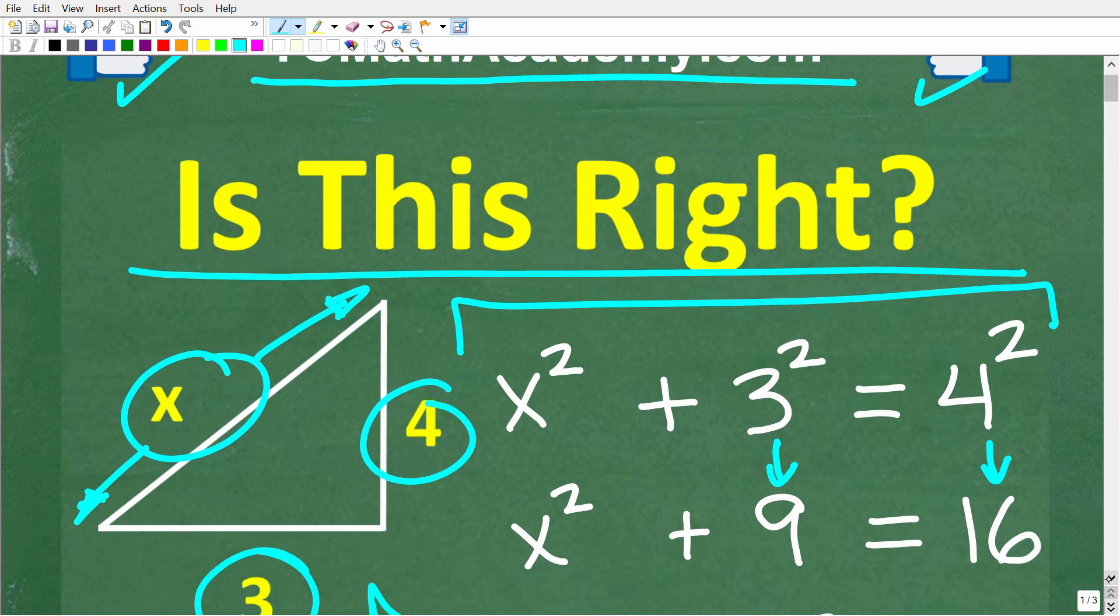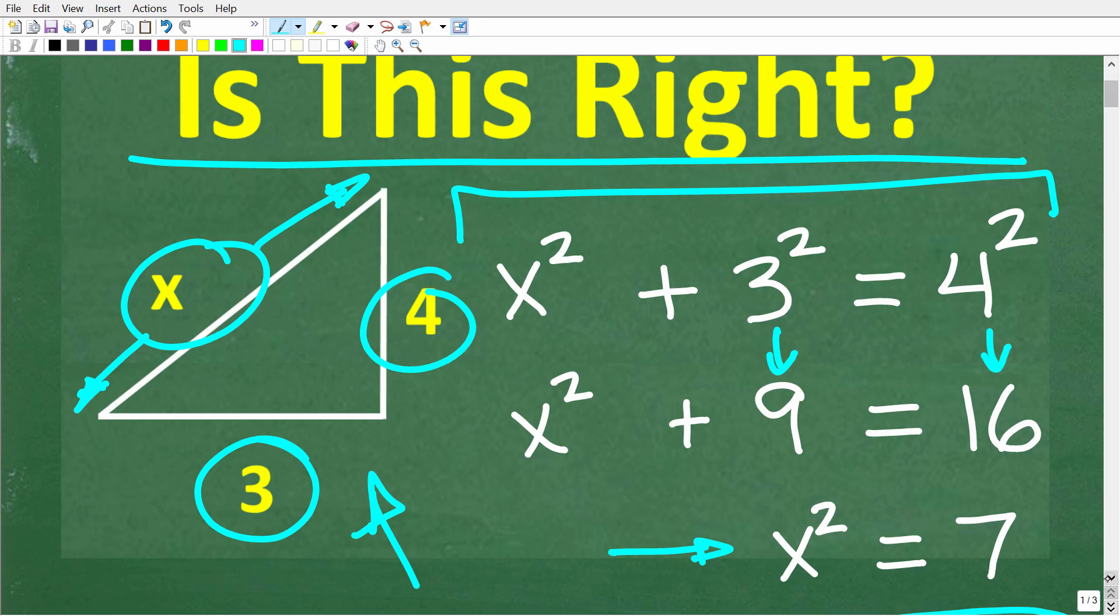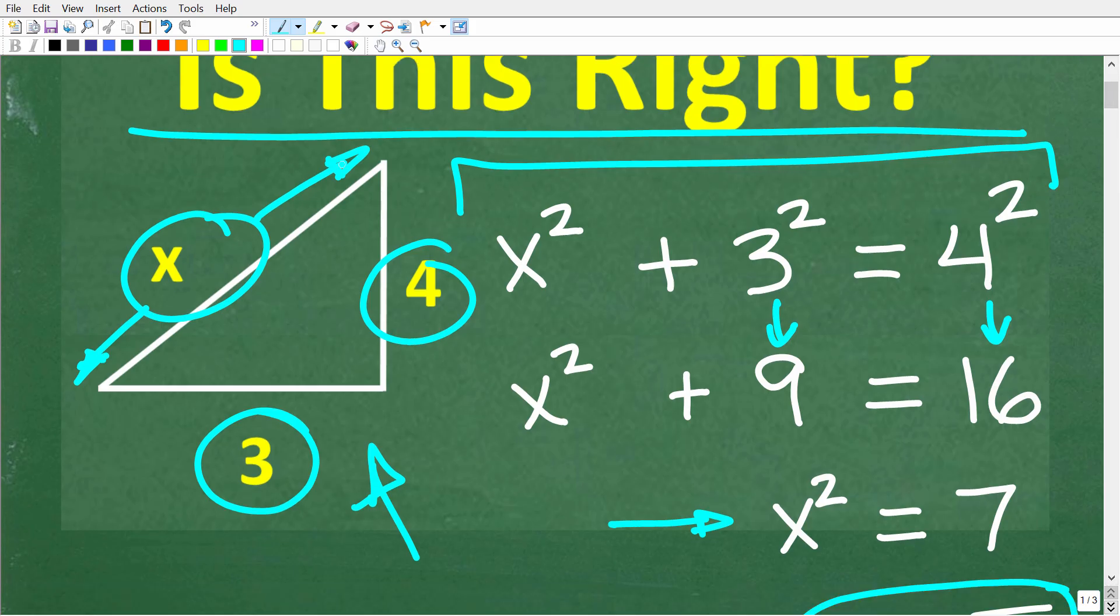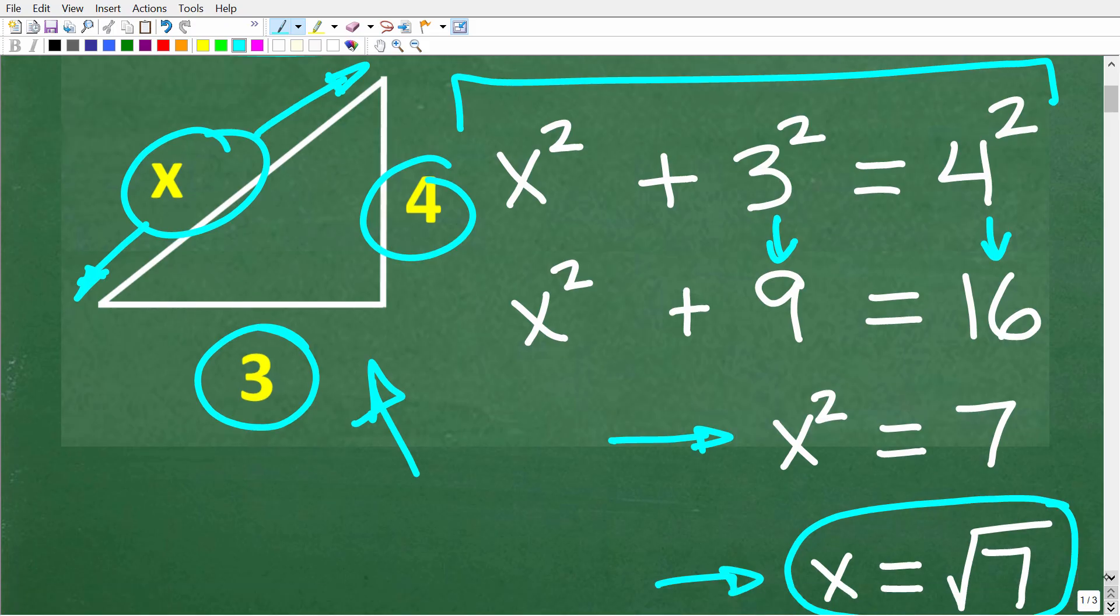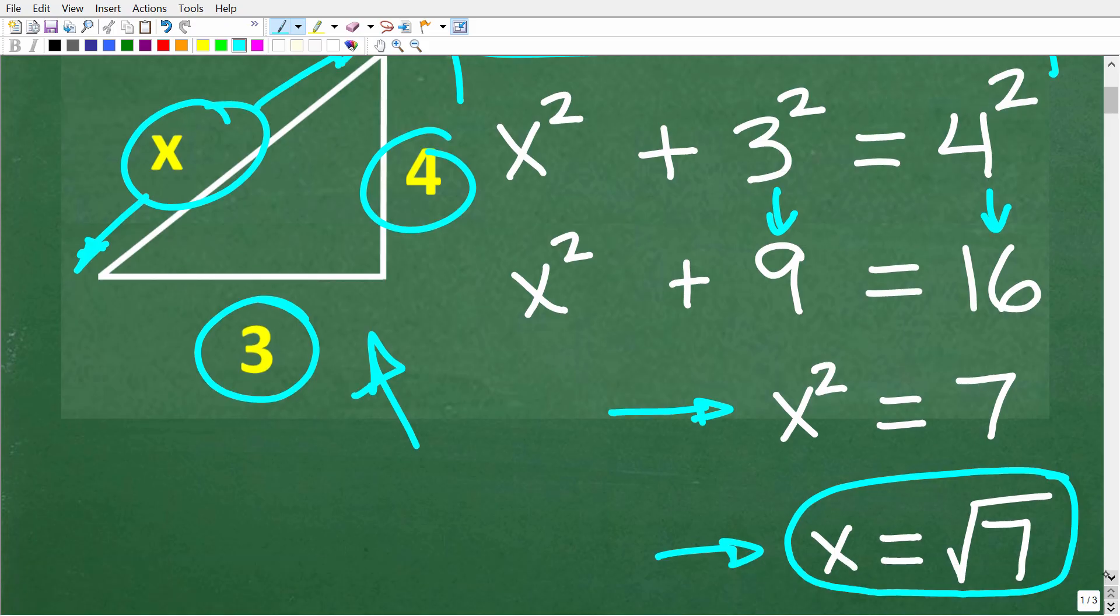Okay, so one more time here is the problem. We're trying to determine this length x in a triangle. We have 3, 4, and x, and here is the work. All right, so feel free to pause the video or look at it. But if you know what you're doing, you should have immediately found at least one error because this work right here is not right.